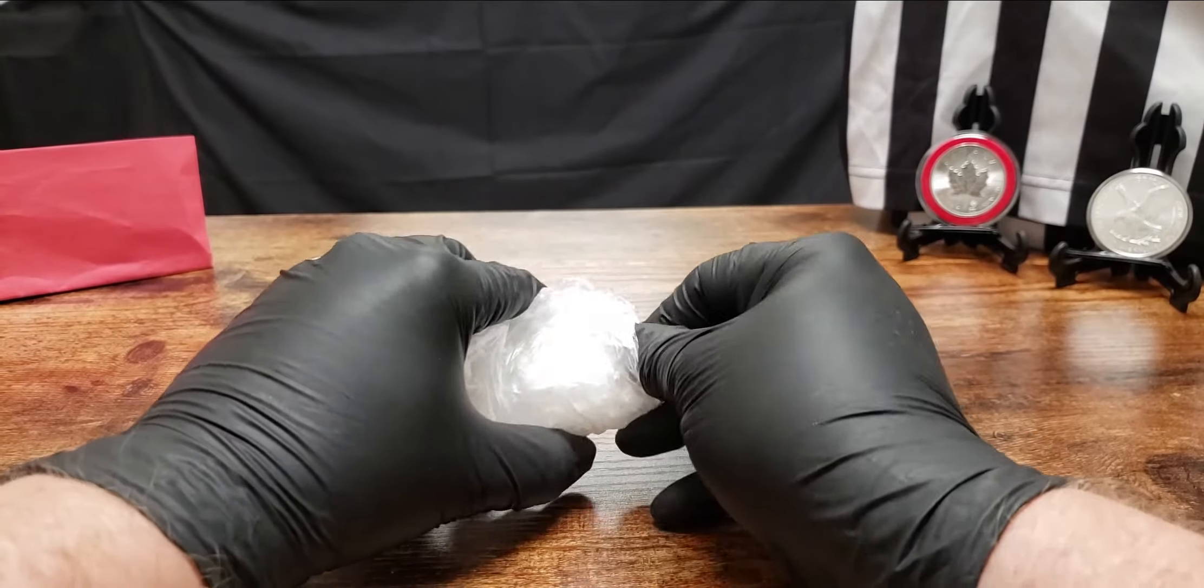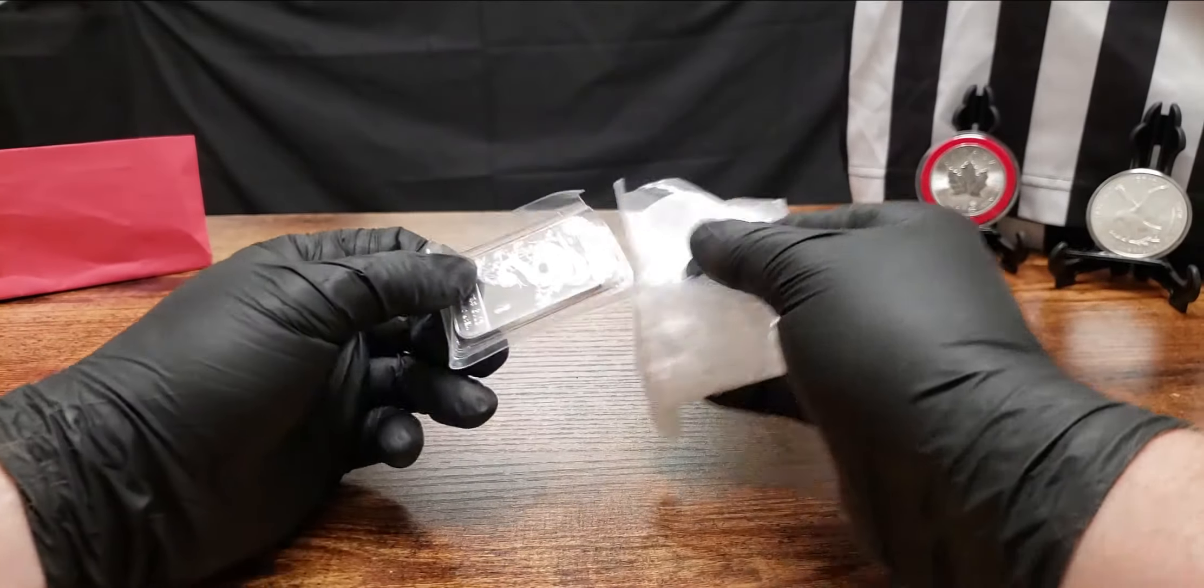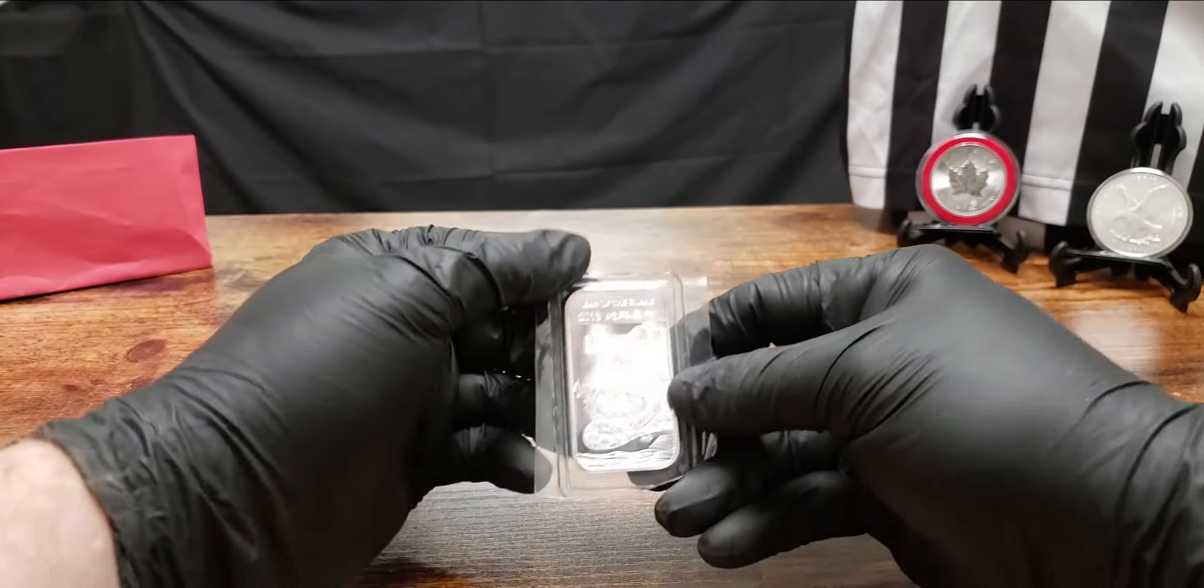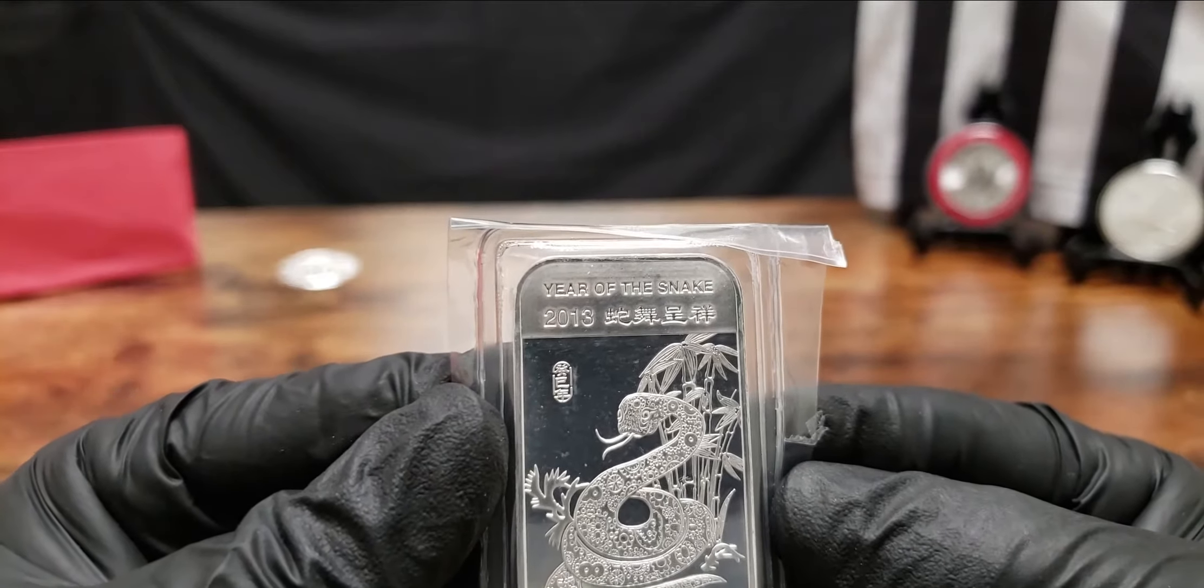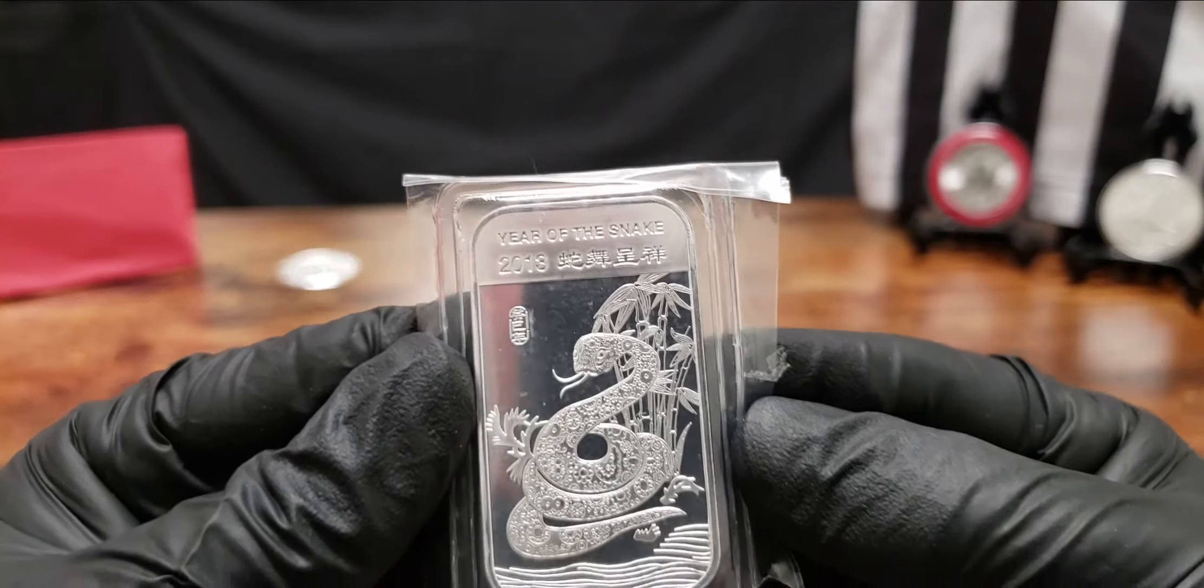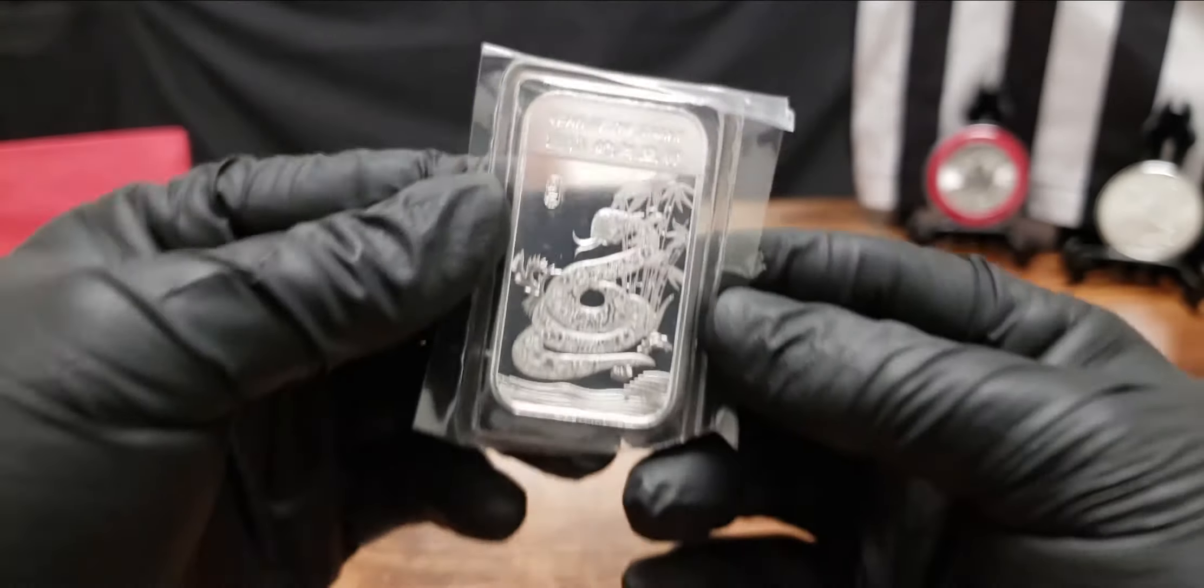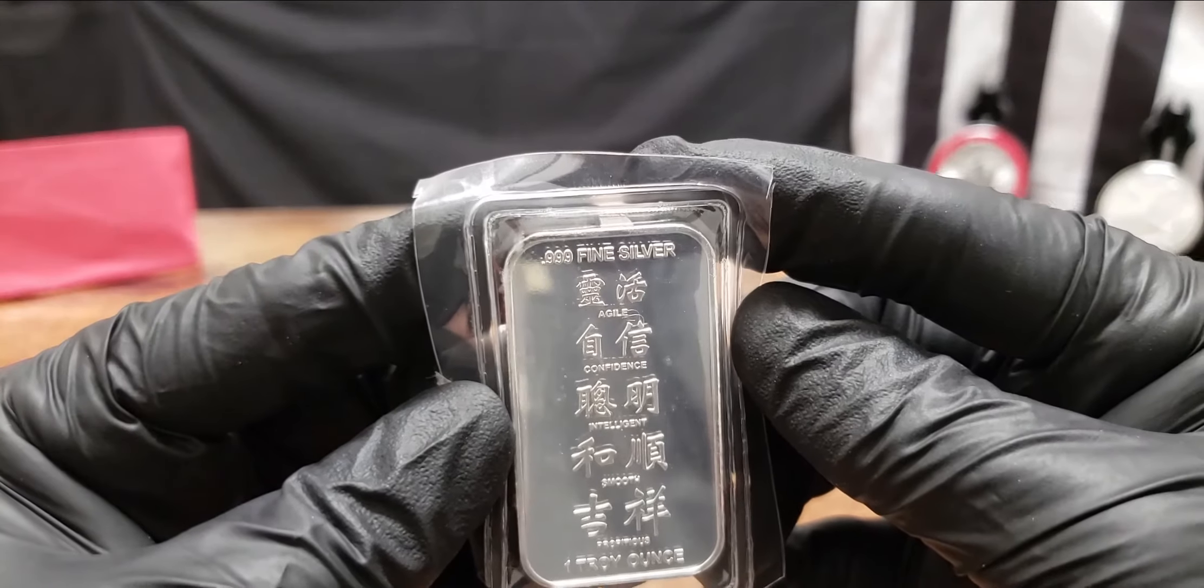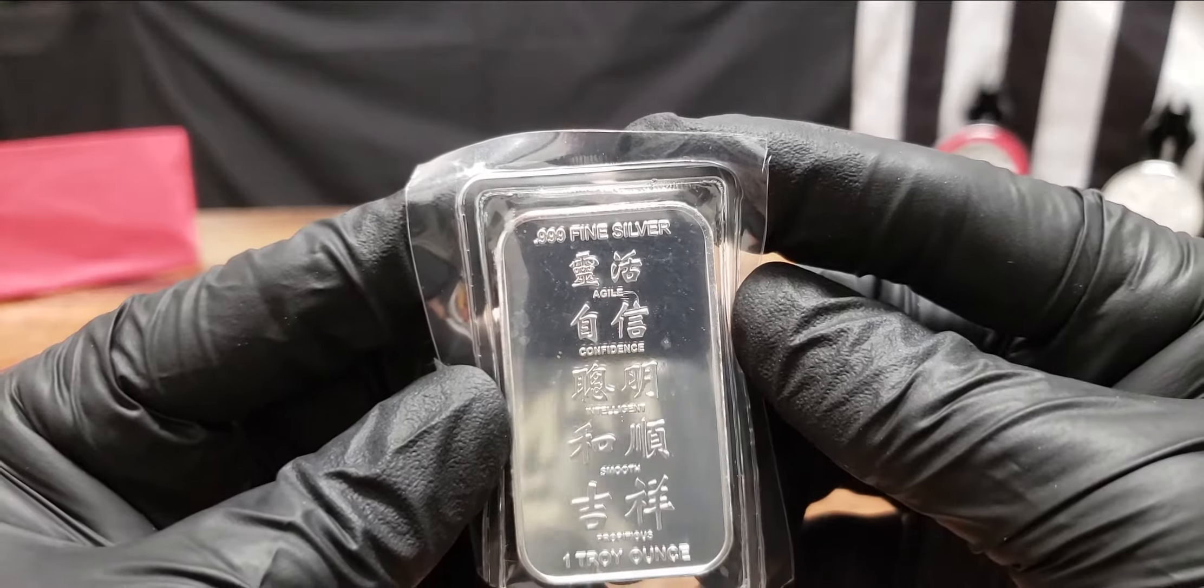So if y'all can't tell this is my very first mail call opening these up. Very very very nice, very nice, very shiny here. Let's see if I can get it close enough where we can see it. The Year of the Snake, 2019, point nine nine five. Very very very nice looking bar.